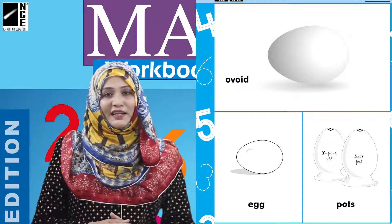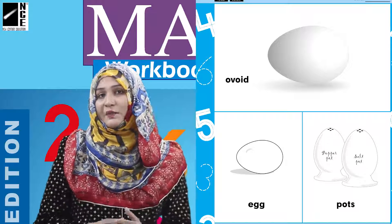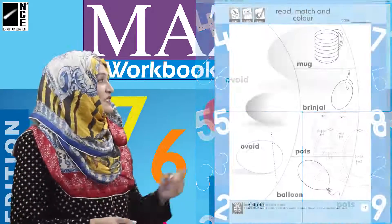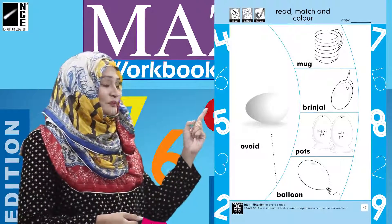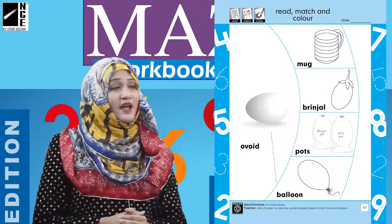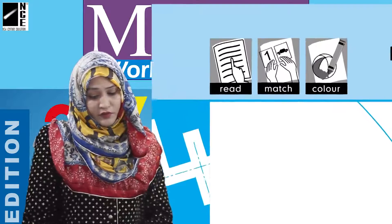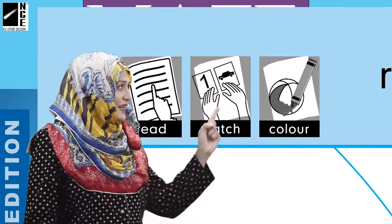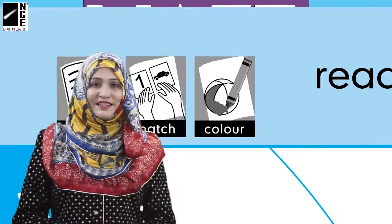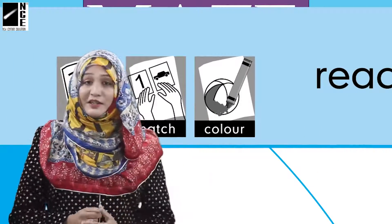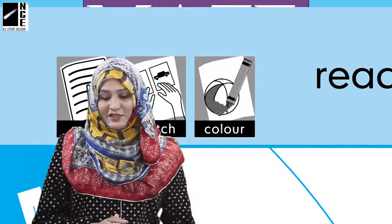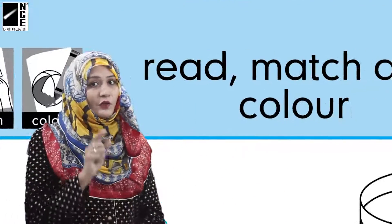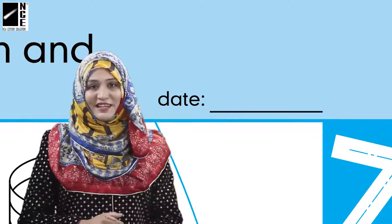Now we can see this shape and we have to understand this shape. It means we have to read, match, and color the shape and pictures. Don't forget to write the date in the date section.